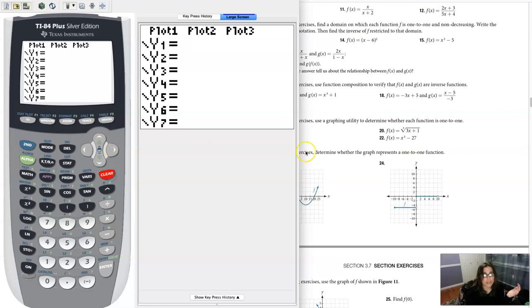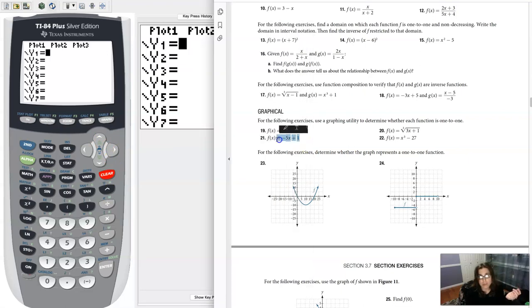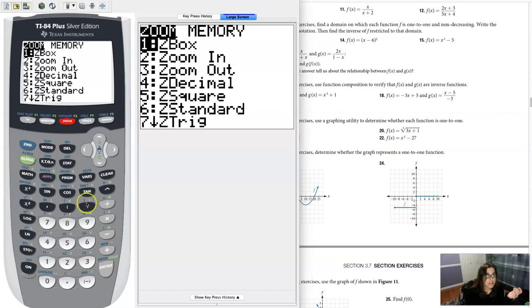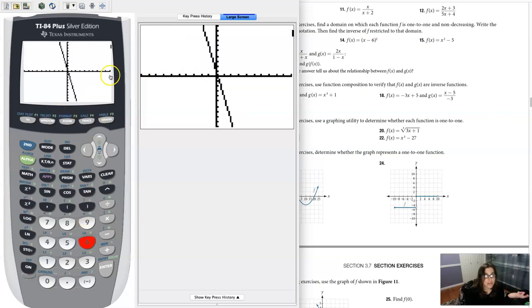So let me go into my y equals, let me clear out that, and it looks like for 21 I'm typing in negative 5x plus 1. I'm gonna hit zoom 6, and when I graph that,